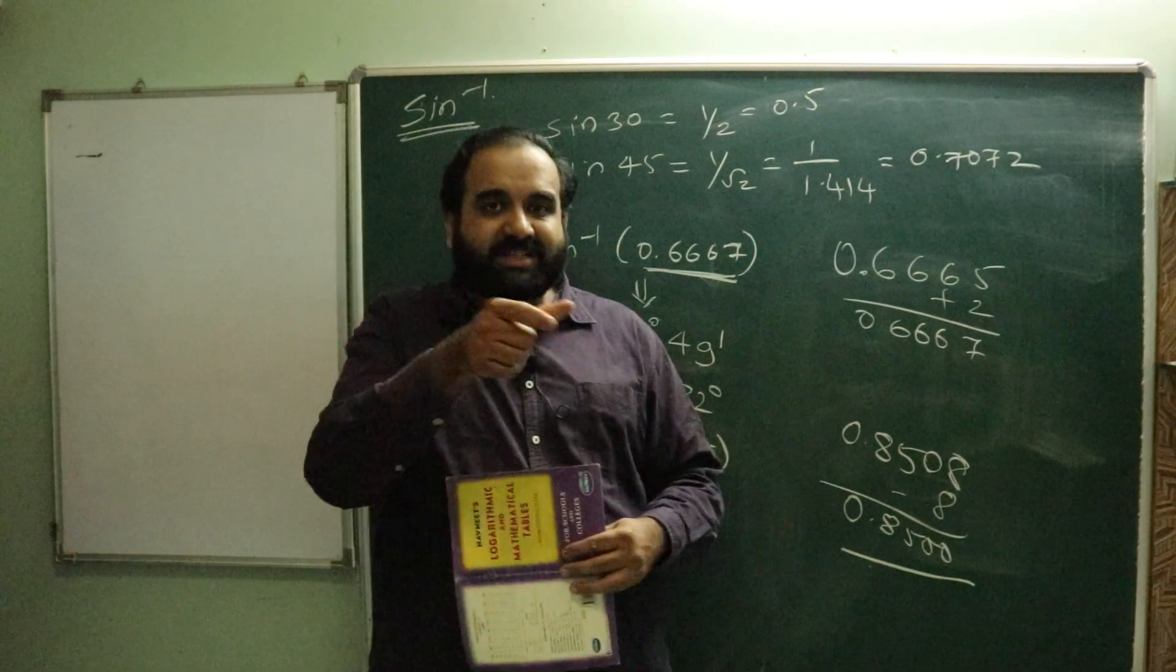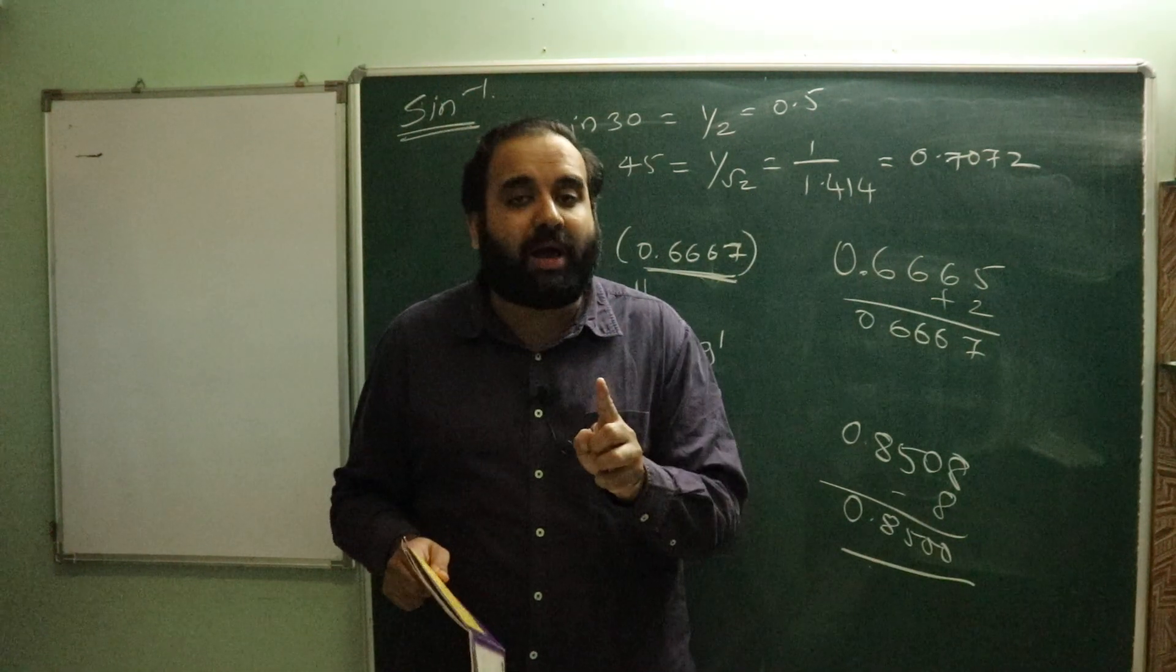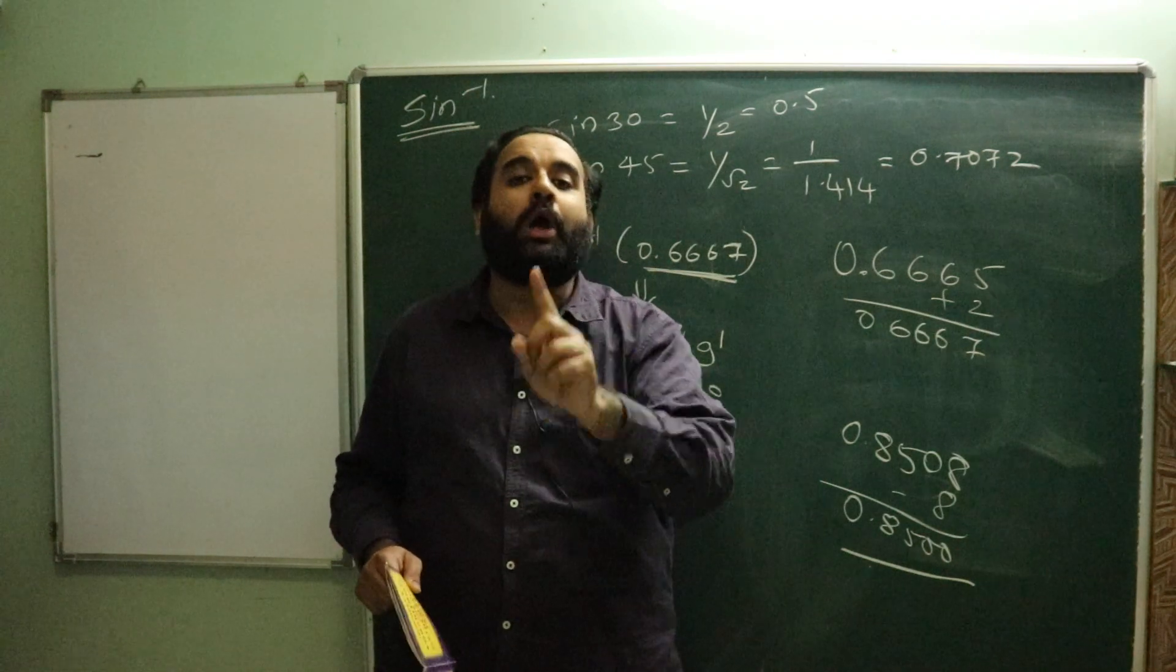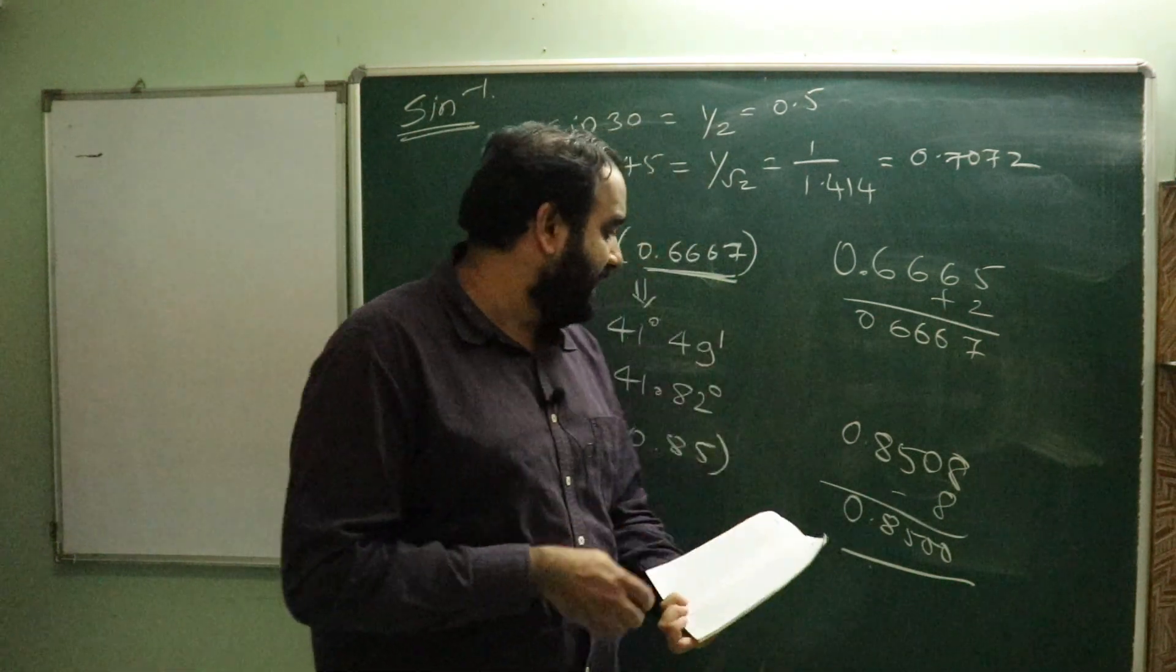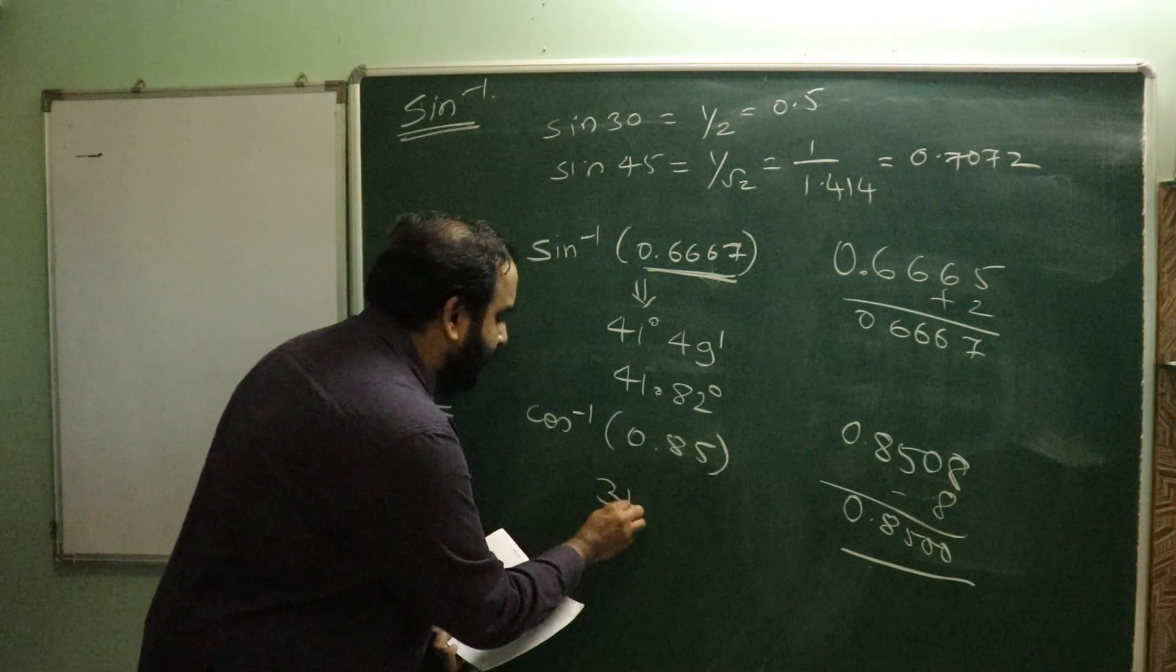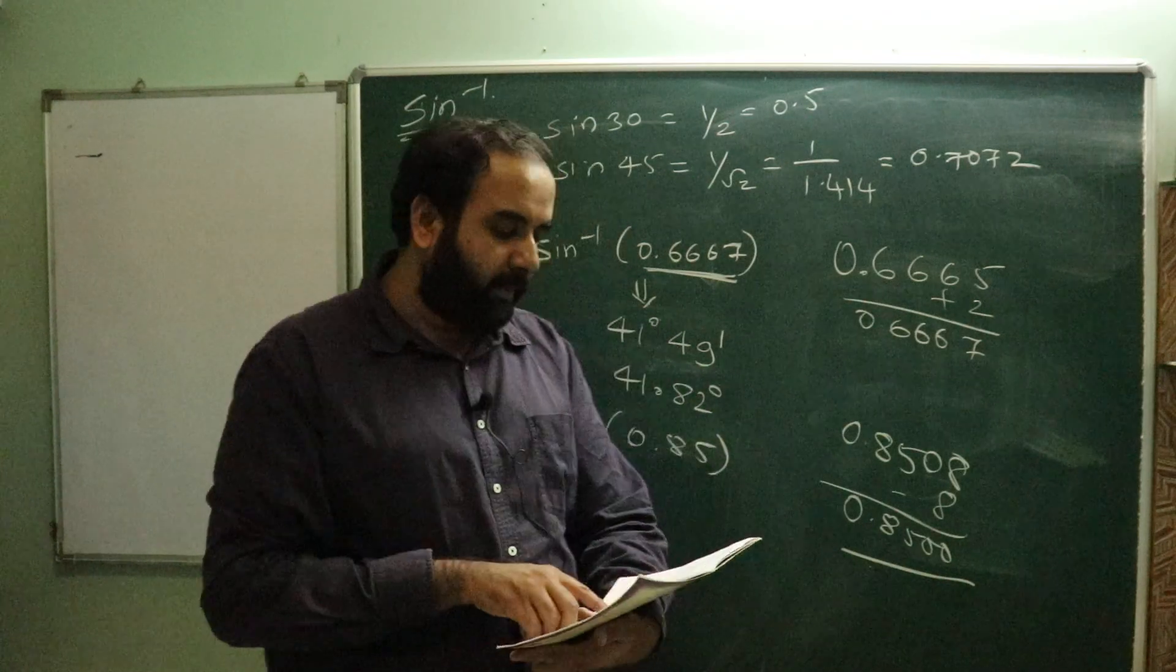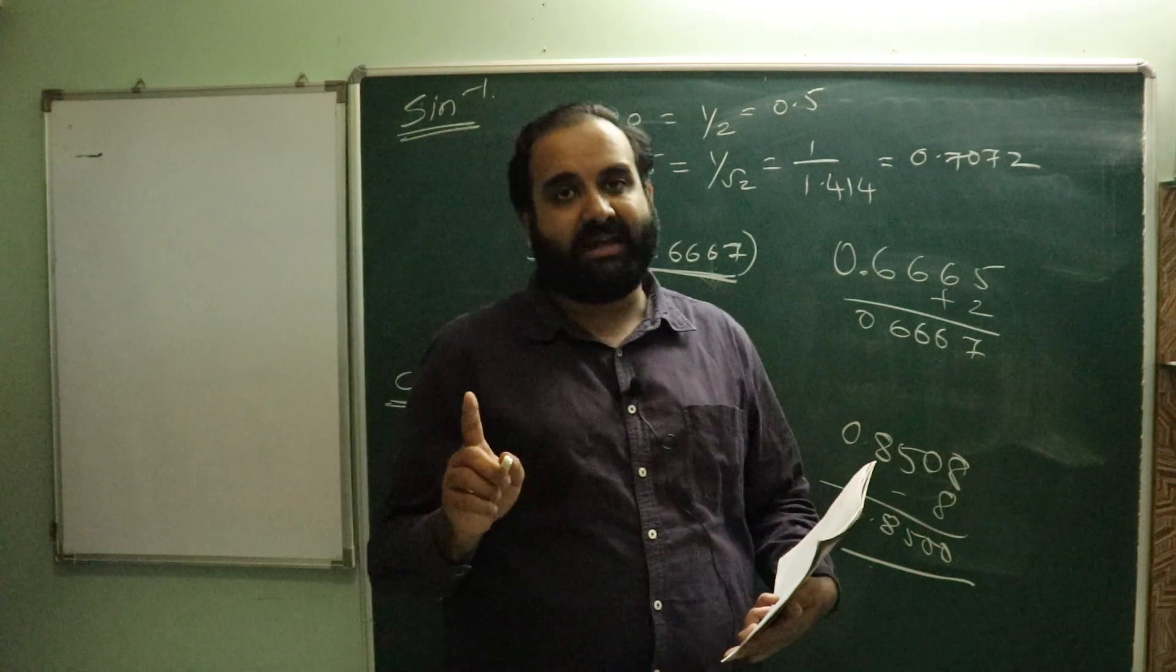So the most important difference we have to remember is that the 42 which is above and the five minutes - both of these will be added. Are you all understanding this? This is where the biggest confusion students have. The corresponding values below - these we have to subtract. But the angles above, the minutes given above, those we have to add. Are you all understanding this?